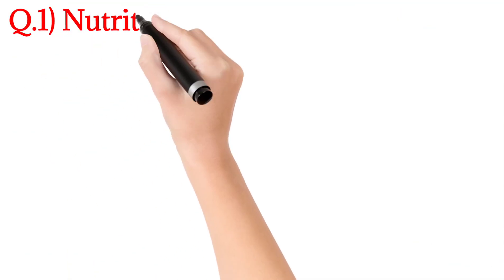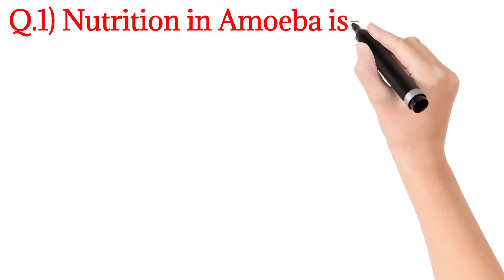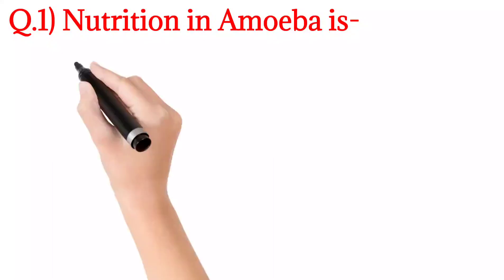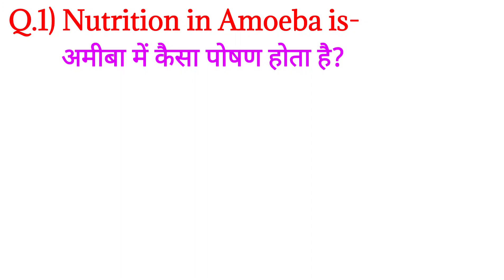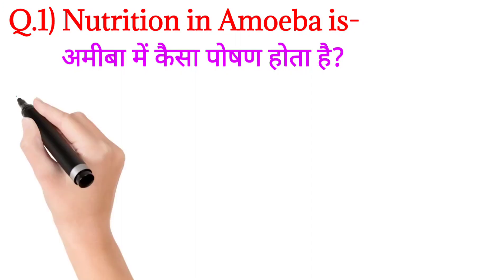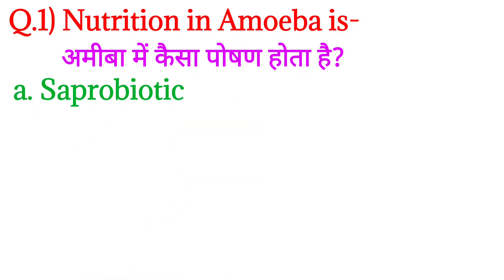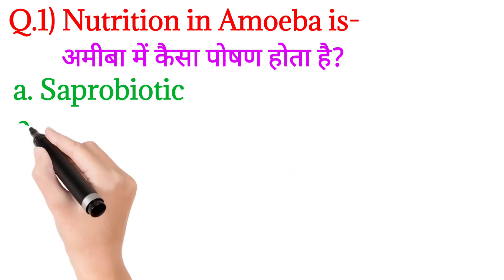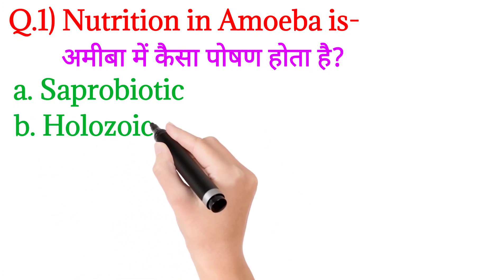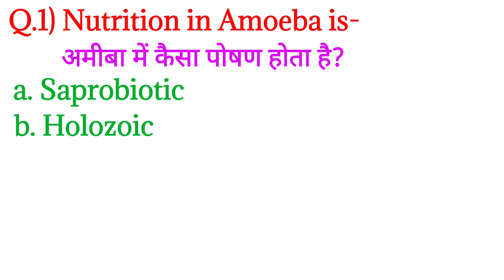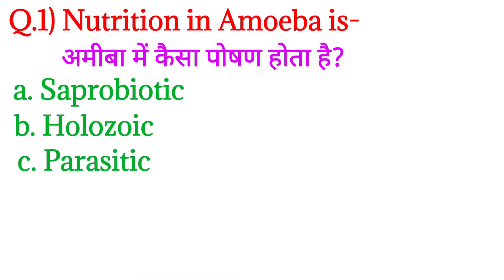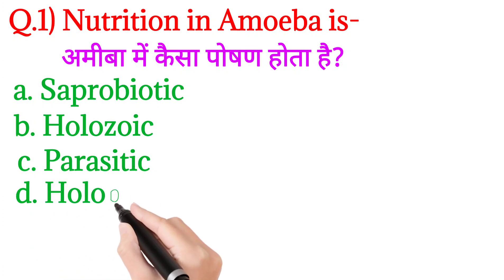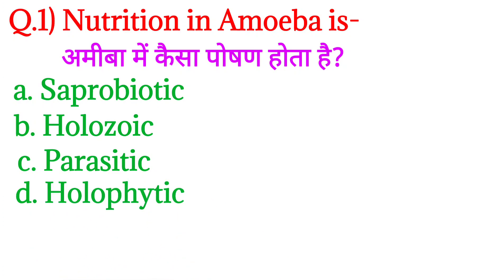This is the first question: Nutrition in Amoeba is? Amoeba mein kaisa poshan hota hai? Kis type ka nutrition paaya jata hai Amoeba mein? Option A: saprotrophic, Option B: holozoic, Option C: parasitic, and Option D: holophytic.